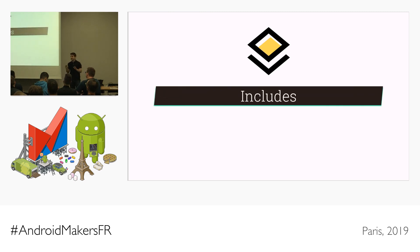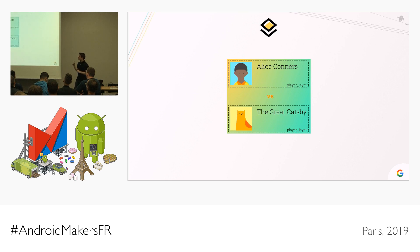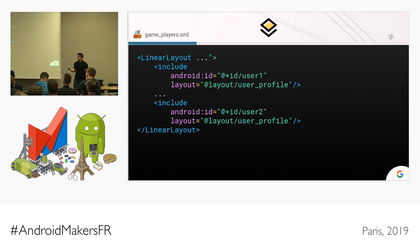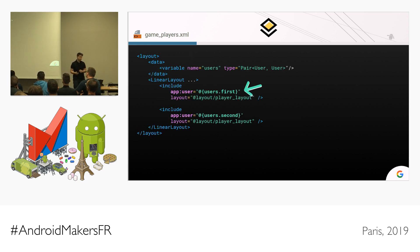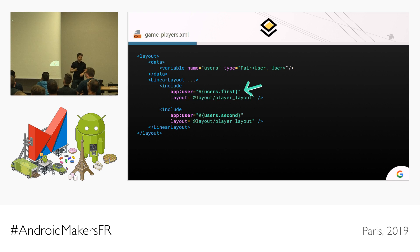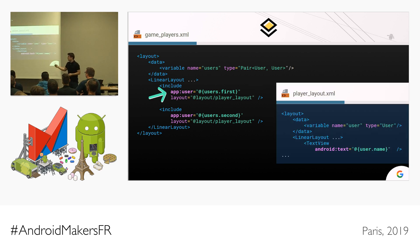For something completely different — this is a feature I really like — it's about how to use data binding with includes. Let's say we want to create a screen with two player layouts. Instead of repeating code you would use an include, including the user profile layout twice. We wrap it in the layout tag and add a variable called users — in this case it's a pair of user — and then assign users.first and users.second to the user attribute. This is actually the variable of the child layout. So just by setting one variable, we can control three different layouts with data binding, which is really cool.